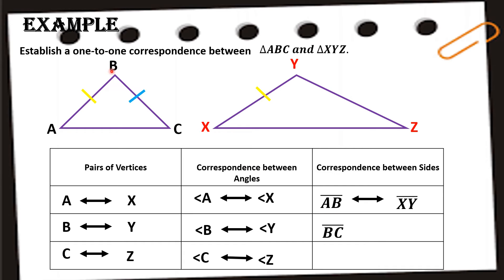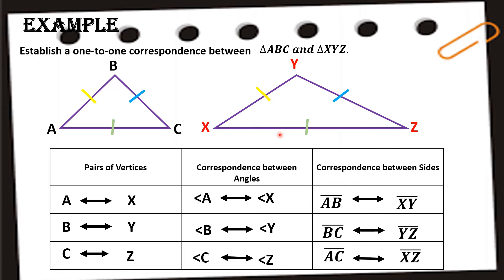Next, side BC corresponds to side YZ. And lastly, side AC corresponds to side XZ. That's how easy correspondence is — as long as we know their positions, we can establish their correspondence, even if the figures are not the same size or shape.